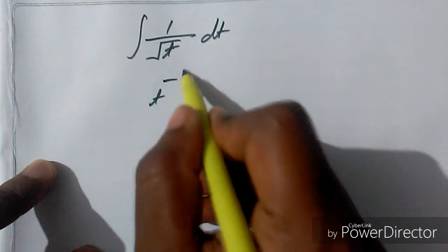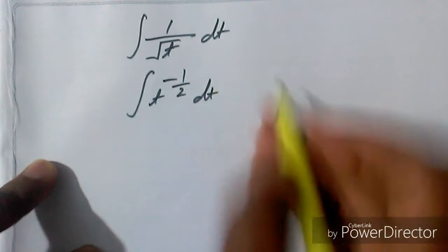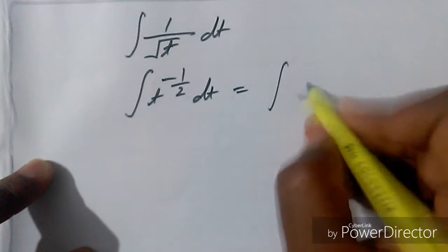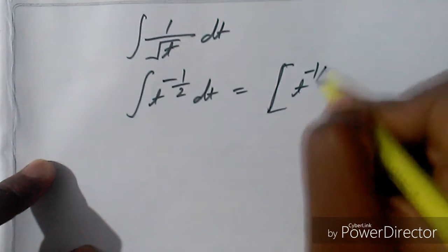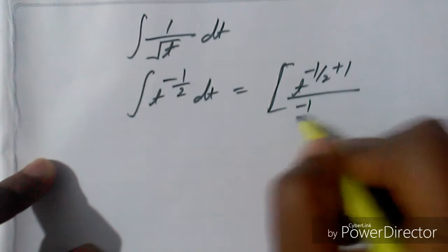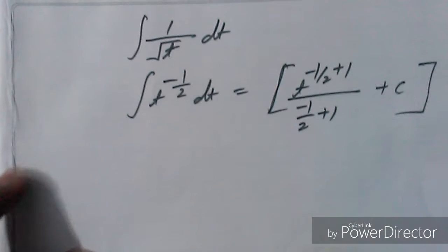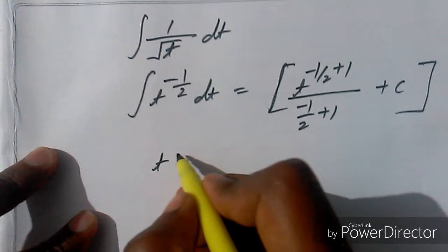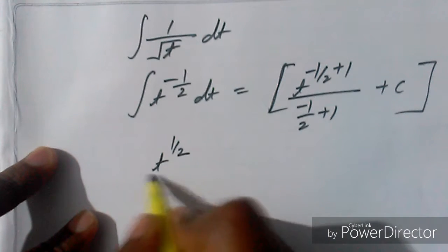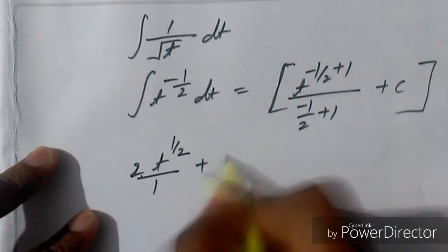We write this as t^(-1/2) dt. Integrating using the power rule: t^(-1/2 + 1) divided by (-1/2 + 1) plus C, which gives t^(1/2) divided by (1/2) plus C, simplifying to 2t^(1/2) plus C.